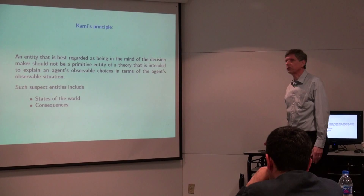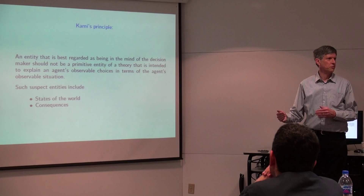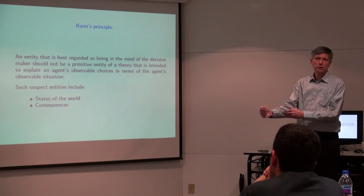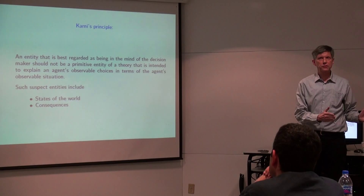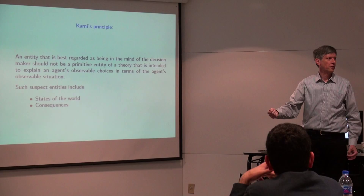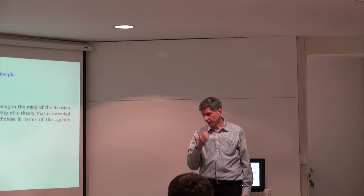Adi Carney has written a series of papers making the point I've been trying to make. He says an entity that is best regarded as being in the mind of the decision maker should not be a primitive entity of a theory that tries to get from data about the agent's choice situation to data about the choices the agent makes — that's revealed preference. Carney is saying the constructs Savage started with are illegitimate constructs for revealed preference theory.